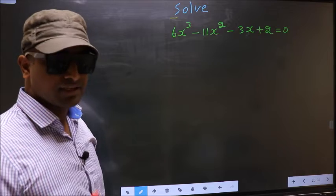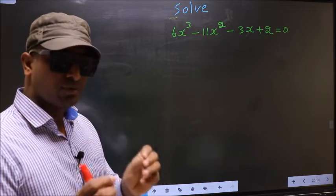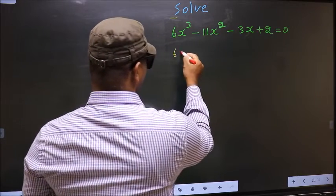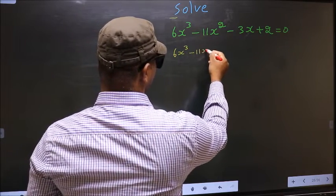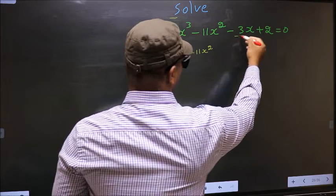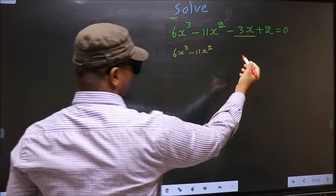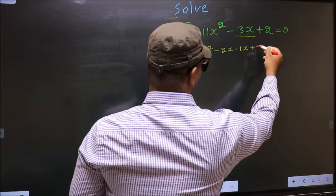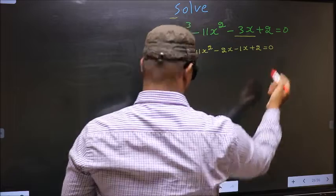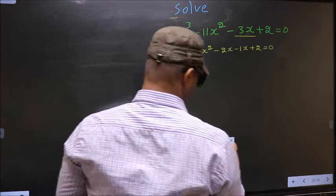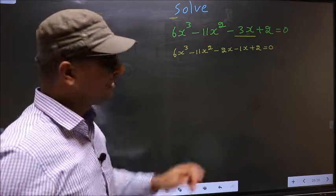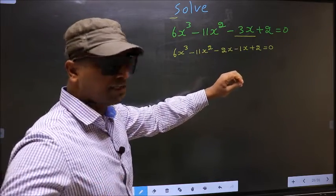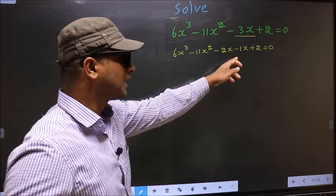For that we should change the x term. Let me see: 6x cubed minus 11x squared, and in place of minus 3x, I write minus 2x minus 1x plus 2 equal to 0. In place of minus 3x I have written minus 2x minus 1x.